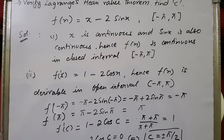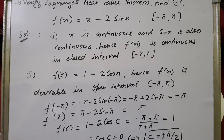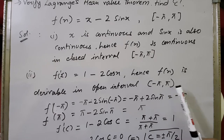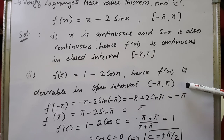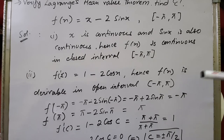Now let's check differentiability. Differentiating: f'(x) = 1 - 2cos(x). The derivative of cos(x) exists everywhere, so f(x) is differentiable in the open interval (-π, 2π). There is no point between -π and 2π at which cos(x) is not defined, so f(x) is derivable throughout that open interval.